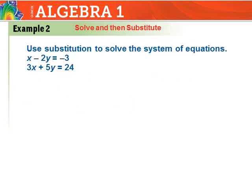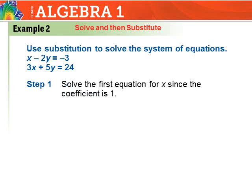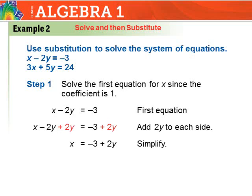In this next example, both equations are in standard form. I need to solve one equation for x first. I pick the first equation because it has a coefficient of 1 for x, which avoids fractions. Solving that equation for x: I move the negative 2y to the other side, so x equals negative 3 plus 2y. That completes step one.